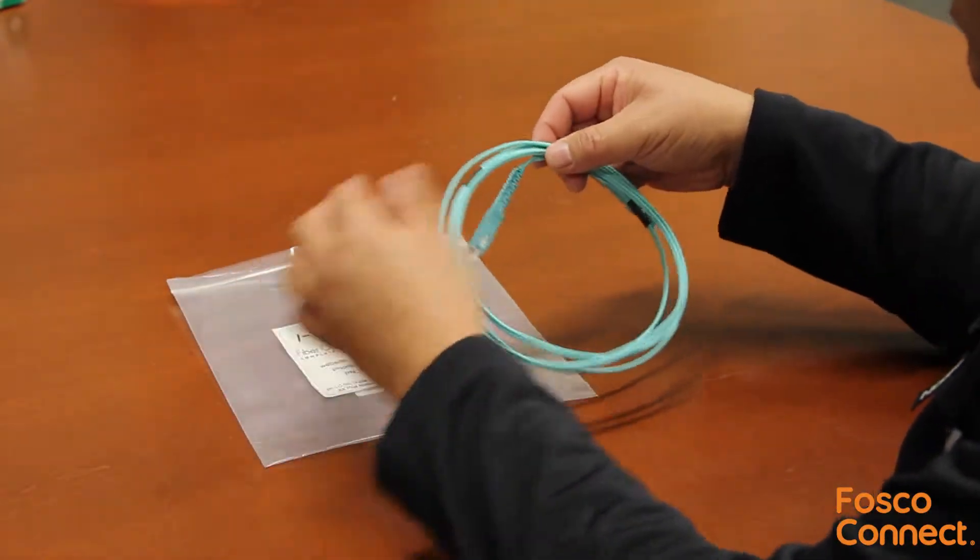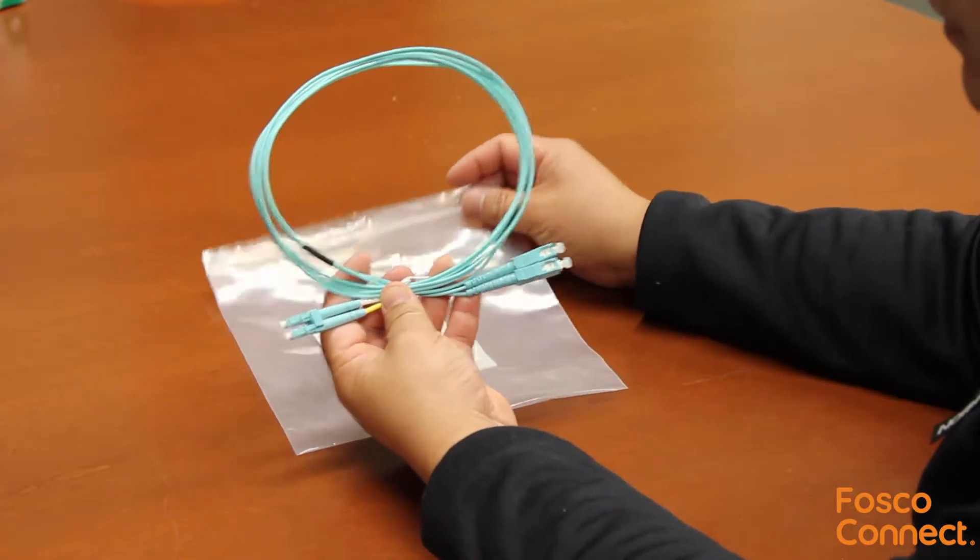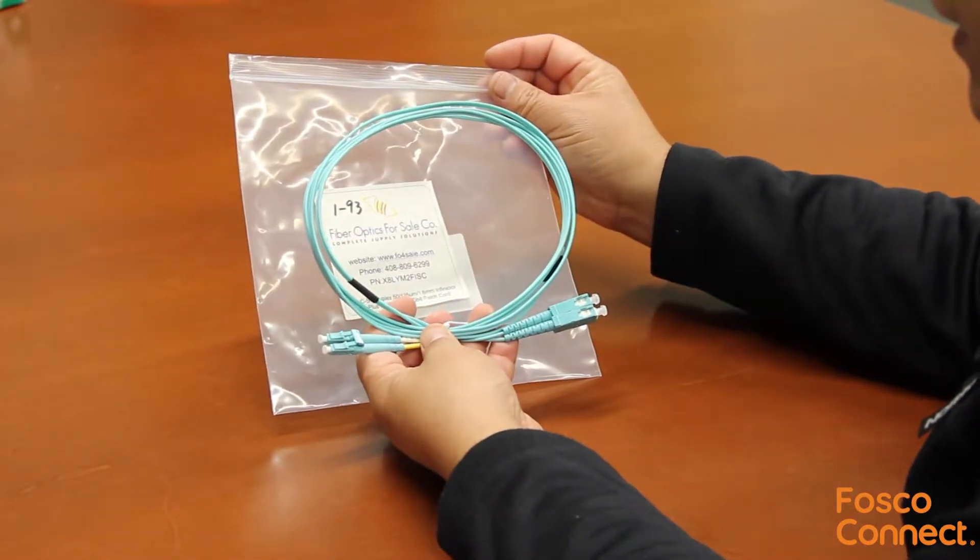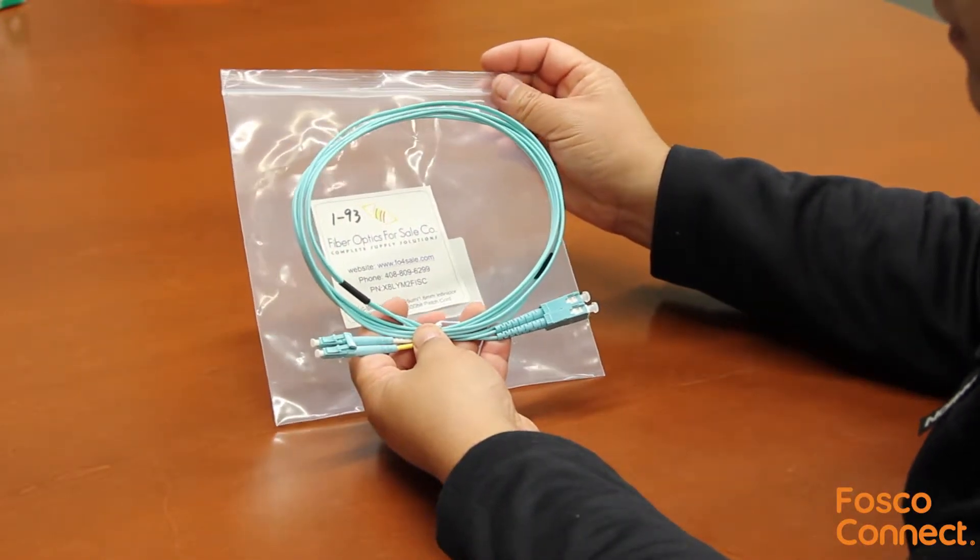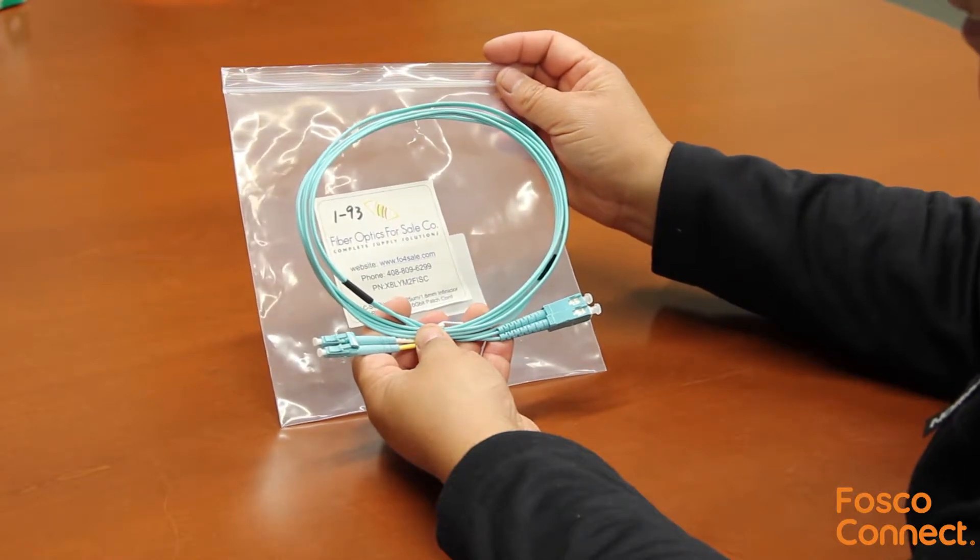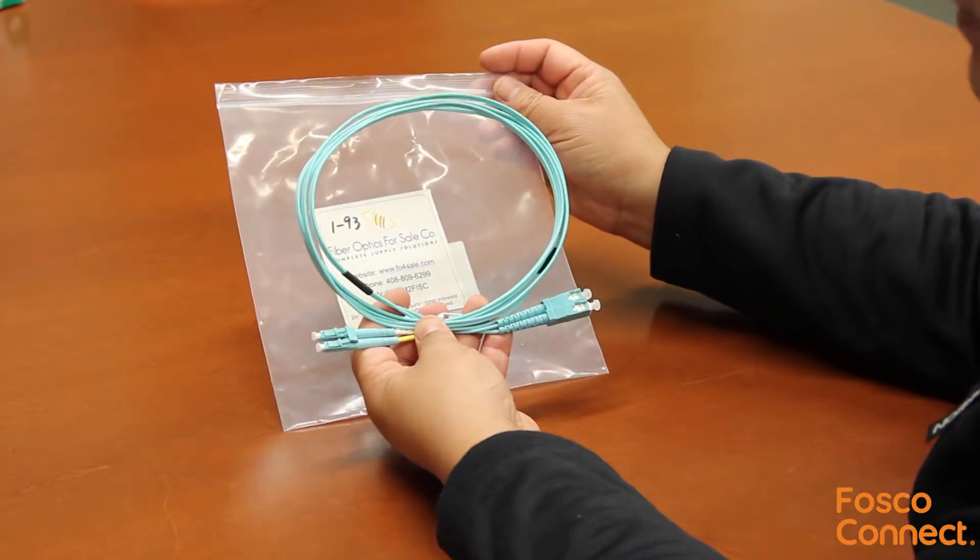The jacket is 1.6 millimeter in diameter, duplex LC on one side and duplex SC on the other side. The aqua color means the fiber is 50 micron OM3 10 gig laser optimized multimode fiber.